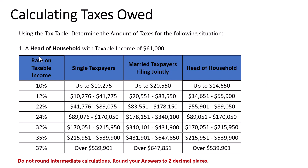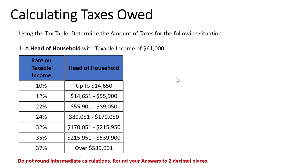In this first problem, we're dealing with a head of household with taxable income of $61,000. The first step when reviewing the tax table is to focus only on the column related to the tax filing status given in the problem. Since this is a head of household situation, I'm going to get rid of the single taxpayer and married filing jointly columns. Now with just the head of household column, the next step is to identify our marginal tax rate. The taxable income of $61,000 falls in the range of $55,901 to $89,050, so let's highlight that tax bracket.